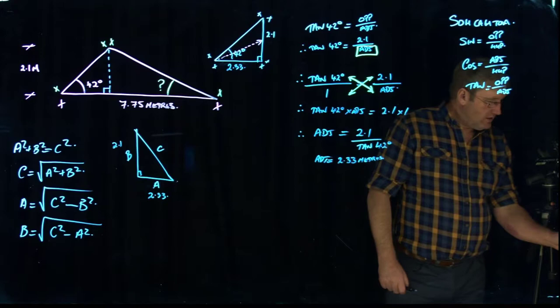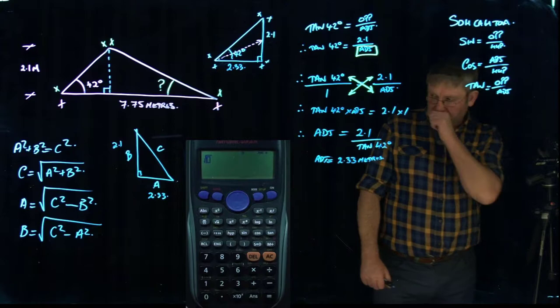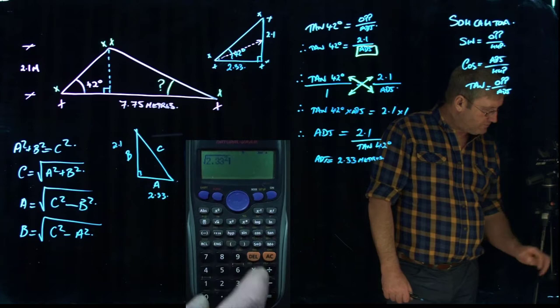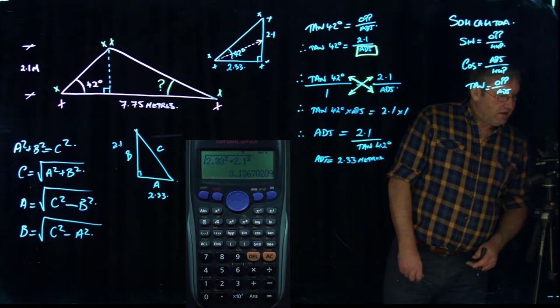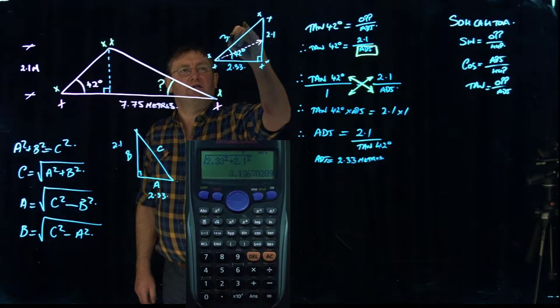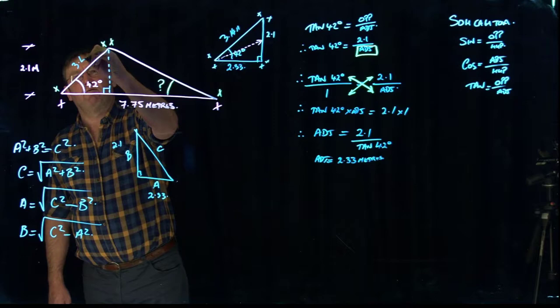So sequencing on the calculator. I'm going to push the square root button for a start. 2.33 squared plus 2.1 squared equals. And that gives us 3 point, we'll go to two decimal places, so 3.14. So that's 3.14 meters. So this up here is 3.14 meters.